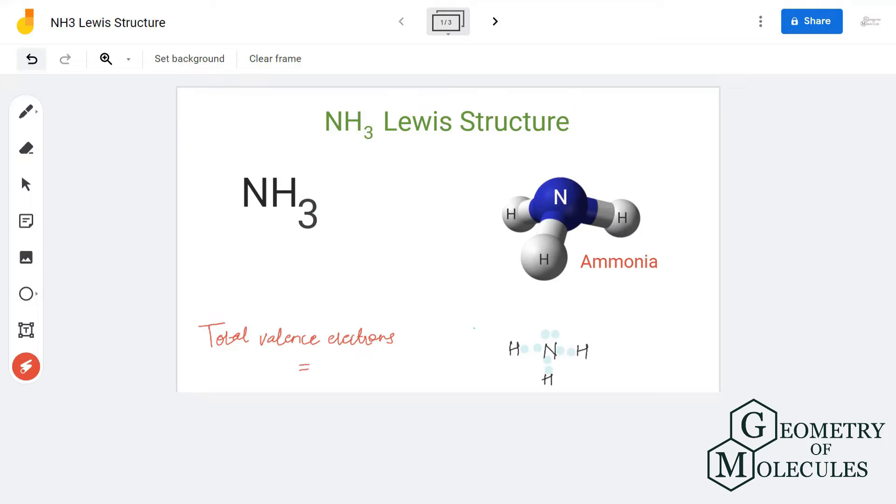Hi guys, today we are going to look at the Lewis dot structure of NH3, or nitrogen trihydride, which is also more commonly known as ammonia. In this video we shall discuss the total number of valence electrons in ammonia as well as its Lewis dot structure.